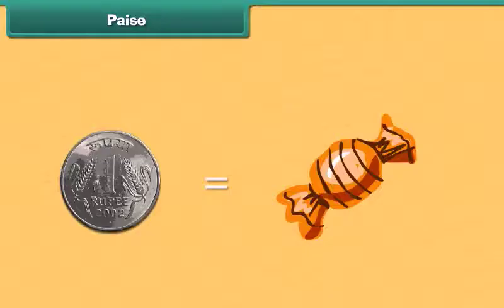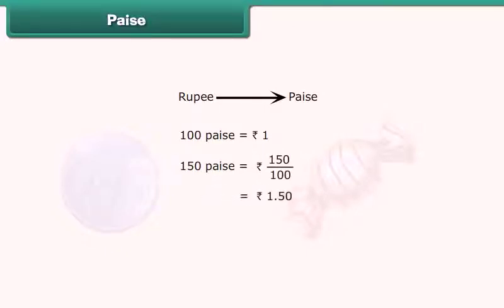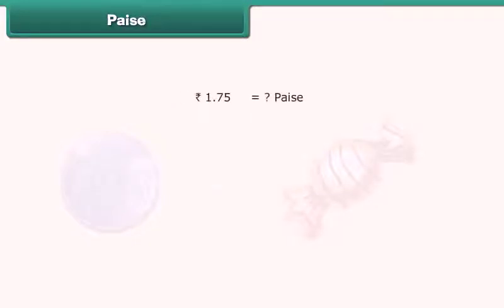Rahul purchased a toffee for 1 rupee. How will you convert this rupee into paise? 100 paise makes 1 rupee. So 150 paise equals 150 divided by 100 rupees, which is 1.50 rupees. When we convert paise to rupees, we divide by 100. To convert 1.75 rupees into paise, we multiply 1.75 by 100 to get 175 paise.